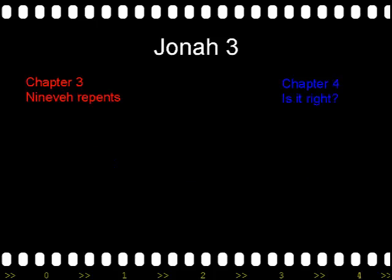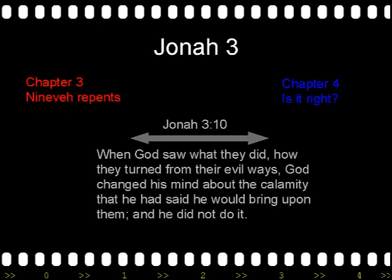Chapter 3, with its miraculous repentance, ends with verse 10: 'When God saw what they did, how they turned from their evil ways, God changed his mind about the calamity he had said would come upon them, and he did not do it.' This provides a fitting conclusion to chapter 3 but also leads us into chapter 4, which will be all about God's conversation with Jonah about that decision, of which Jonah will disapprove.